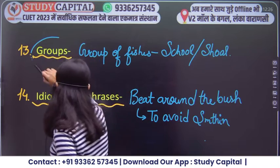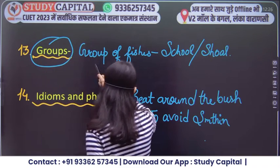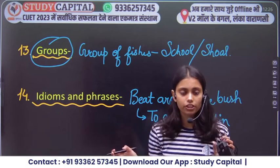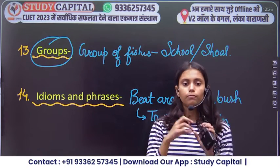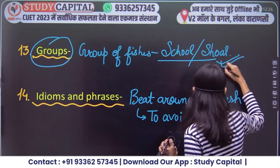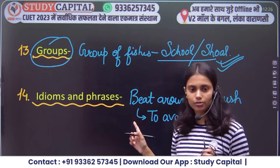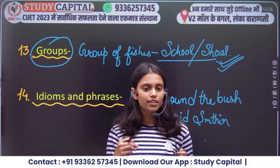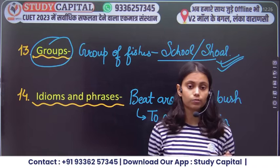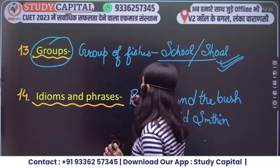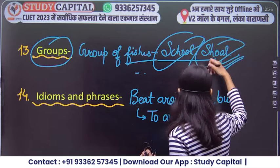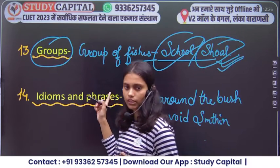Then we have collective nouns — groups. What we want to say in terms of groups: for example, group of fishes, group of cows, group of goats — these have proper names. I think this is covered in fourth or fifth class in all textbooks, whether you follow NCERT or another textbook. For example, group of fishes is called a school or a shoal — we will deal with that in class.